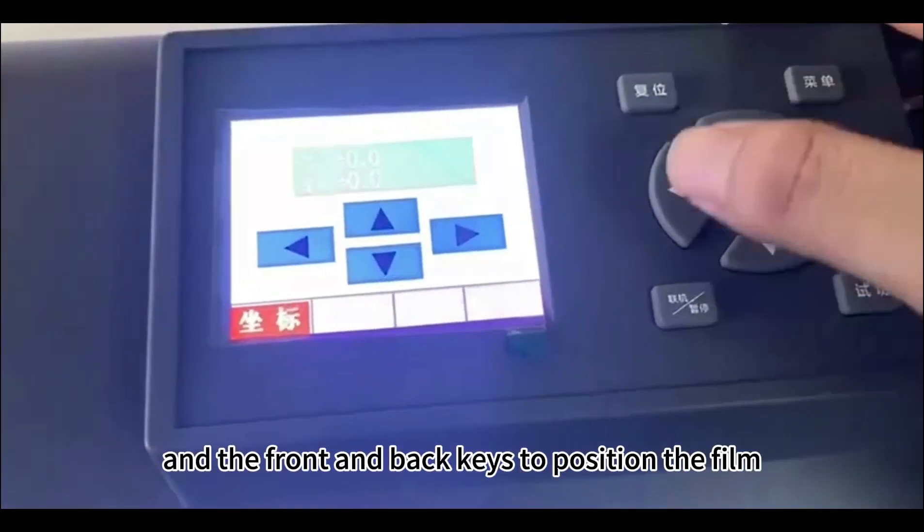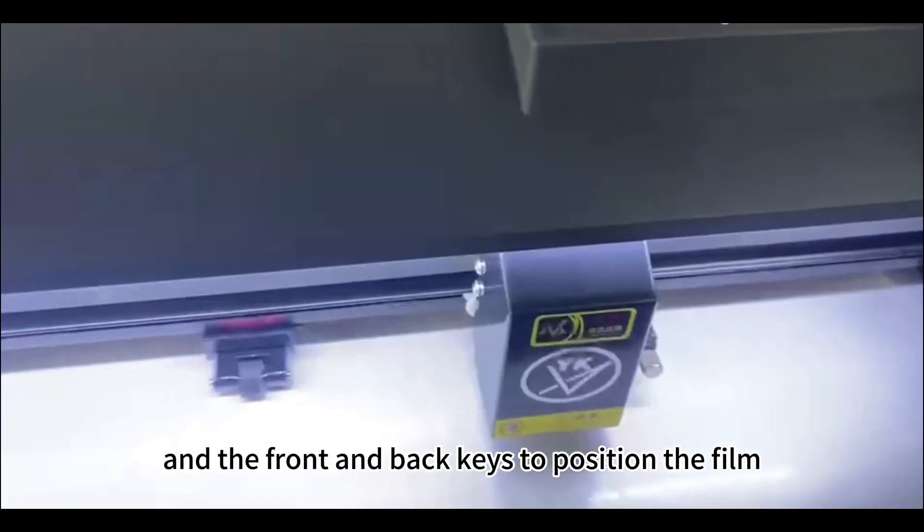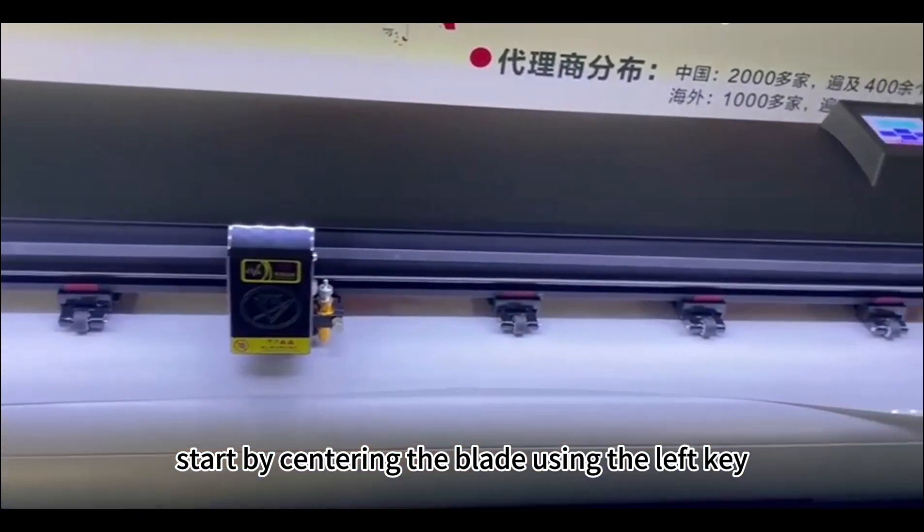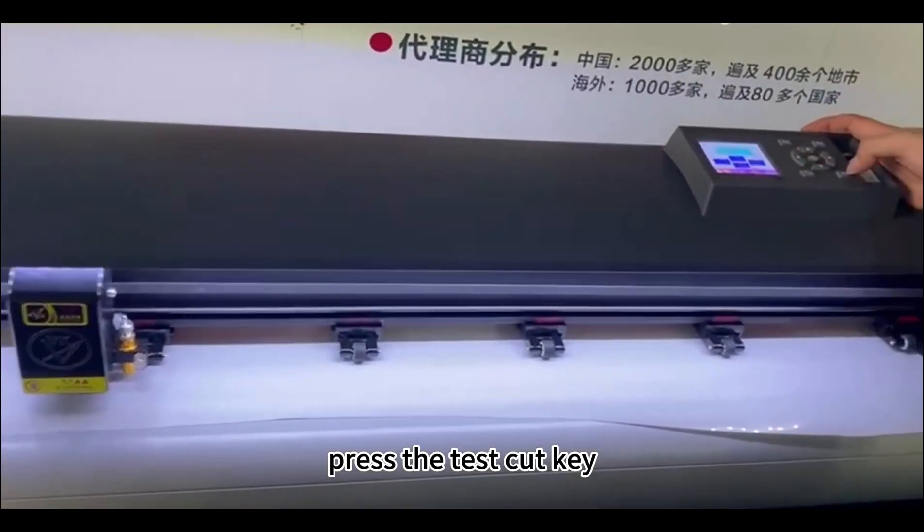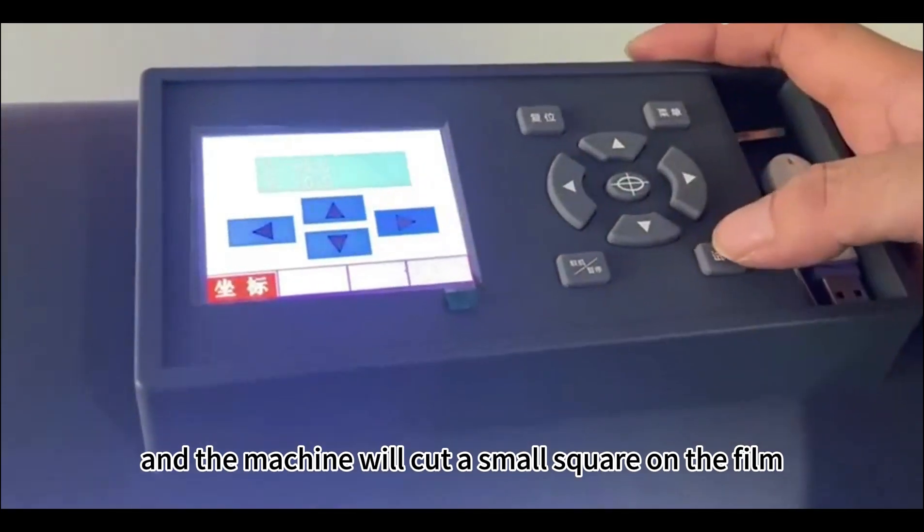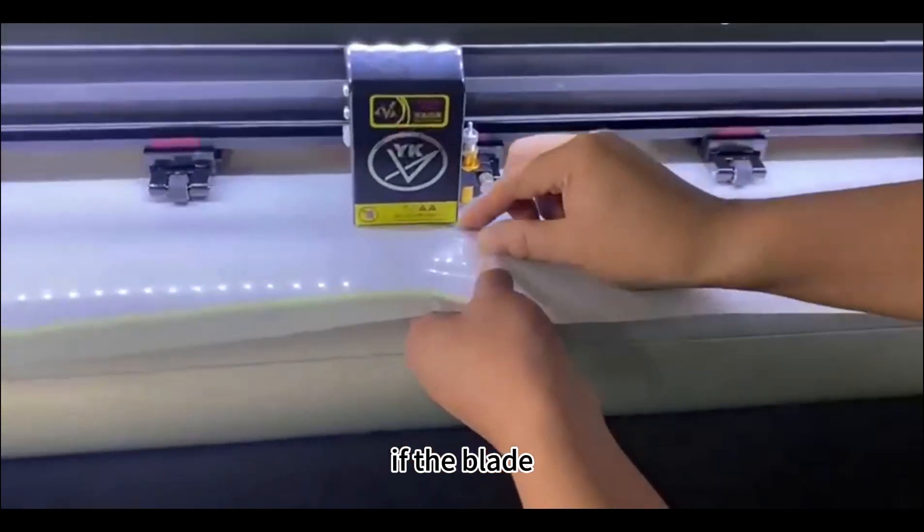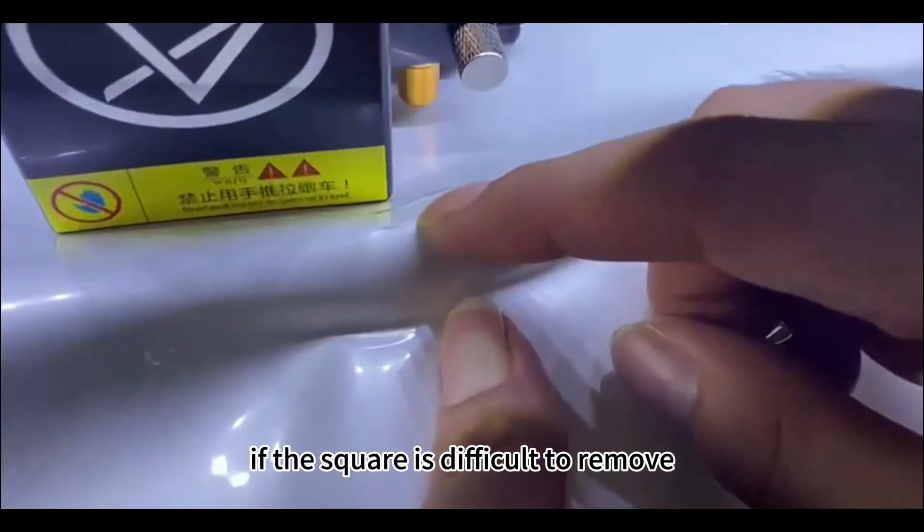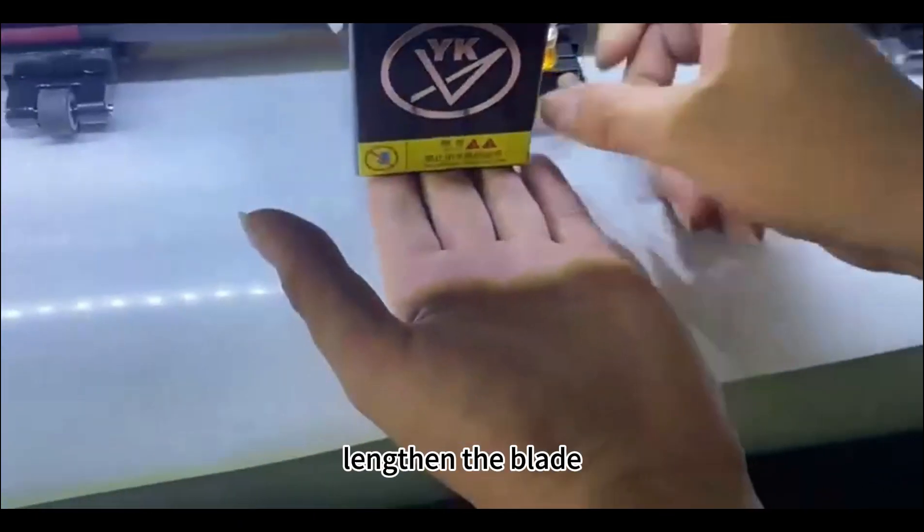Use the left and right keys to adjust the blade's position laterally and the front and back keys to position the film. Start by centering the blade using the left key. Once centered, press the test cut key and the machine will cut a small square on the film. If the blade cuts through the second layer of the backing paper, shorten the blade a bit. If the square is difficult to remove, lengthen the blade.